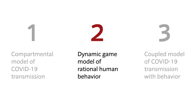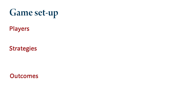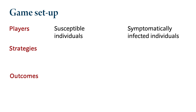Next, let's set up a dynamic game model of rational human behavior as a response to the COVID-19 pandemic. To set up a game, there are three ingredients: we need players, strategies that these players can use, and the outcomes of these choices. I am going to set up two separate games. In one game, the players are going to be the susceptible individuals. In the second game, the players are going to be symptomatically infected individuals.